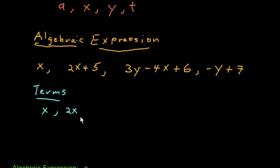In the second expression, there's actually two terms, 2X and 5. In the third expression that we have up here, we have three terms. Three Y minus four X and six are all terms of that third algebraic expression. And in the last one, we have a negative Y and seven are terms of that fourth expression.